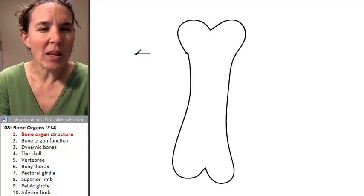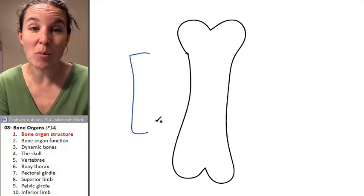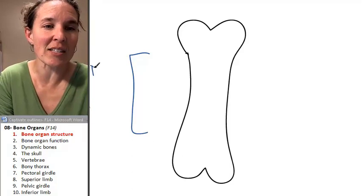First of all, the long straight shaft of a bone is called the diaphysis.